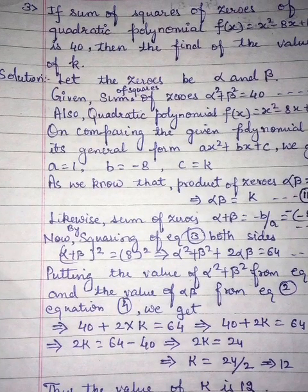So 2K is equal to 64 minus 40. 2K is equal to 64 minus 40. Then we will subtract, then 2K is equal to 24.